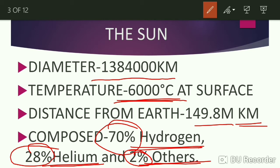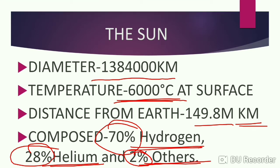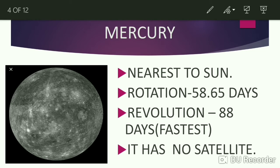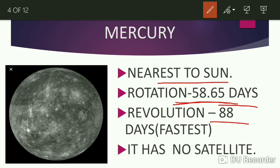Now let's discuss the very first planet of our solar system, that is Mercury. It is the nearest planet to our sun. The rotation time taken by Mercury is 58.65 days. Revolution time is 88 days, and it is considered as the fastest revolution by any planet in our solar system. Mercury does not have any satellite of its own.